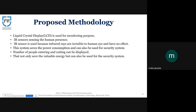Moving on to our proposed methodology: this system is designed using a number of components, each performing its own function. The inputs are two IR sensors and an Arduino UNO, and the outputs are an LCD and a bulb. The LCD is used for monitoring and will display the count. One IR sensor is placed outside the room and the other inside. We used IR sensors because infrared rays are invisible to the human eye and have no harmful effect. The proposed system will not only save energy but will also be used for security purposes.